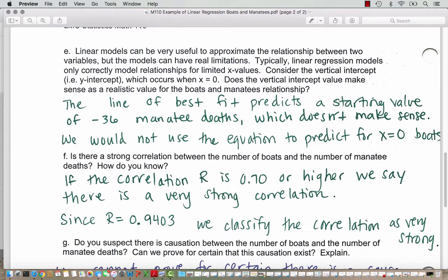Linear models can be very useful to approximate the relationship between two variables, but the models can have real limitations. Typically, linear regression models only correctly model relationships for limited x values. Consider the vertical intercept, also known as the y-intercept, which occurs when x equals 0. Does the vertical intercept value make sense as a realistic value for the boat to manatee relationship?